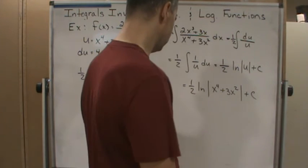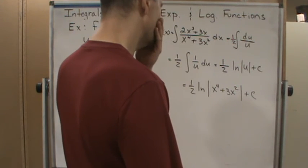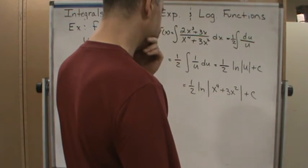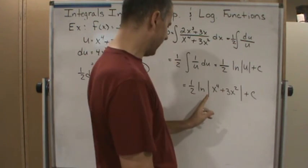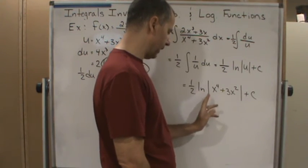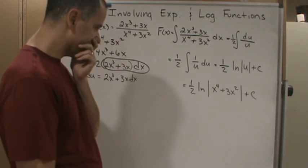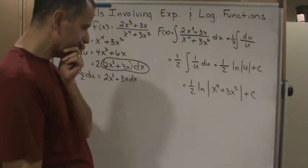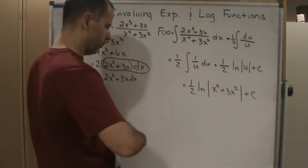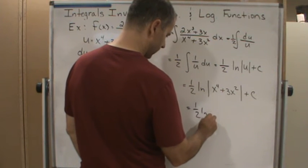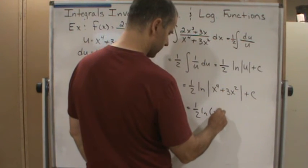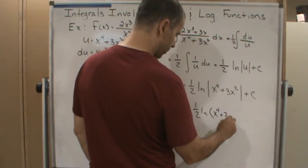Or excuse me, hold on, it will be 0 but that's okay. Even in the case of 0, I don't need the absolute value signs. So I'm going to write it as 1 half the natural log of x to the fourth plus 3x squared plus c.